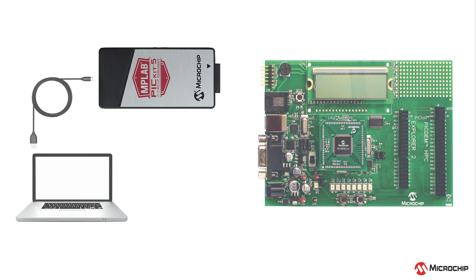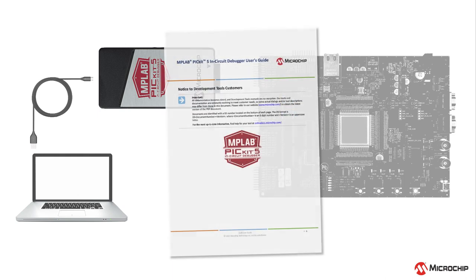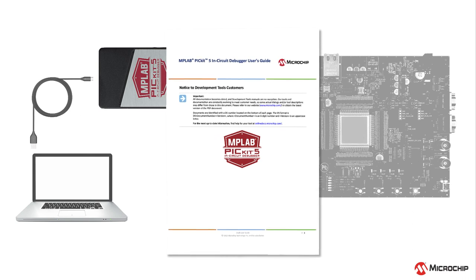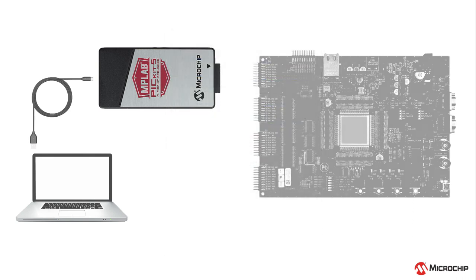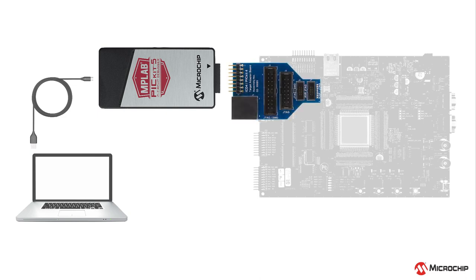When connecting to your own hardware design, the interface circuitry must meet the PICkit communication specification, as described in the PICkit-5 in-circuit debugger user's guide. An adapter board available for separate purchase provides standard connectors for JTAG, SWD, ICSP, and AVR protocols. You might already have this board from a previous generation tool.